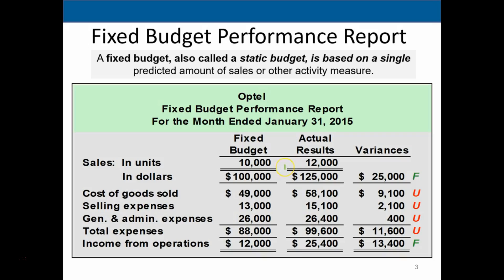What actually happened: we sold 12,000 units — 2,000 more than expected — so our sales are greater at $125,000 versus the budget of $100,000; that's a favorable difference. But cost of goods sold was budgeted at $49,000 and we spent $58,100 — an unfavorable difference of $9,100. Selling expenses were budgeted at $13,000 but came in at $15,100 — an unfavorable difference of $2,100. General and administrative shows the same pattern.